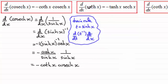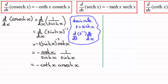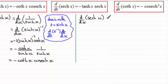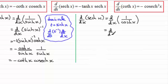Now when it comes to differentiating sech x, it's going to be very similar to this method, where we think of differentiating sech x as differentiating 1 over cosh x. So you might like to pause the video at this stage and try this one yourself. To differentiate with respect to x sech x, I'm going to treat this as differentiating 1 over cosh x, and I would change this to differentiating cosh(x) to the power minus 1.